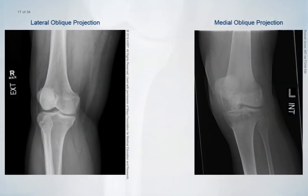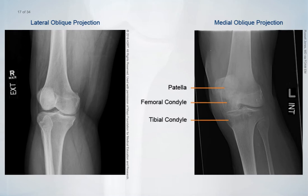AP oblique projections will show the patella, femoral condyles, tibial condyles, and the fibular head rotated either laterally or medially. The medial oblique projection also shows the proximal tibial fibular joint.